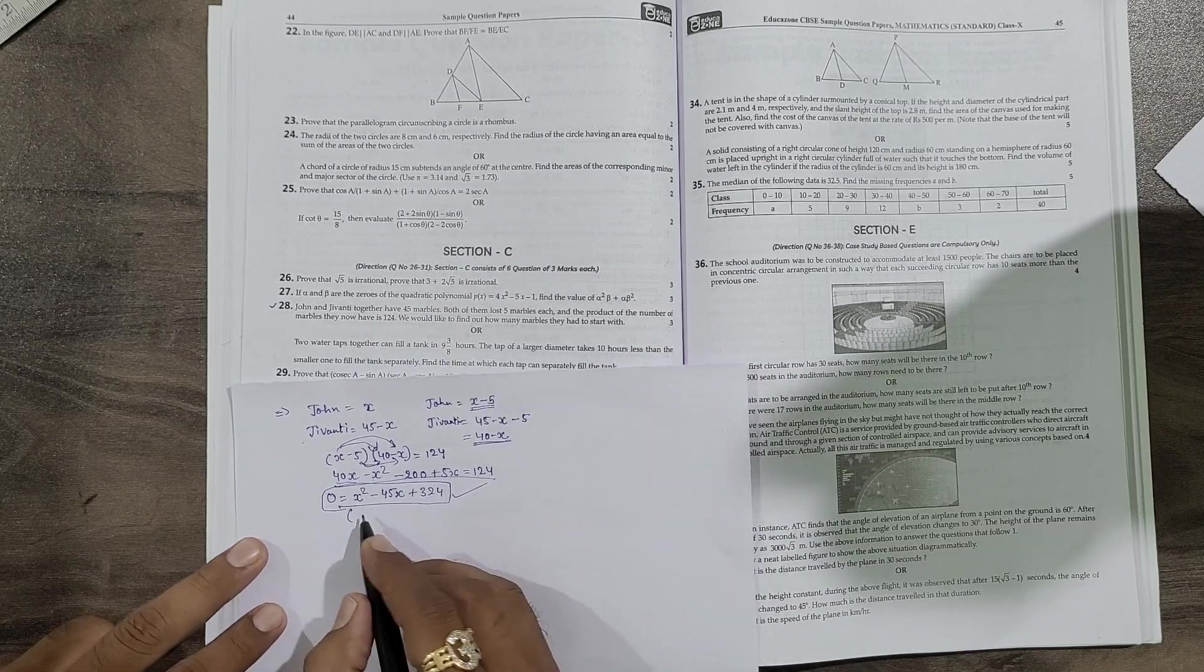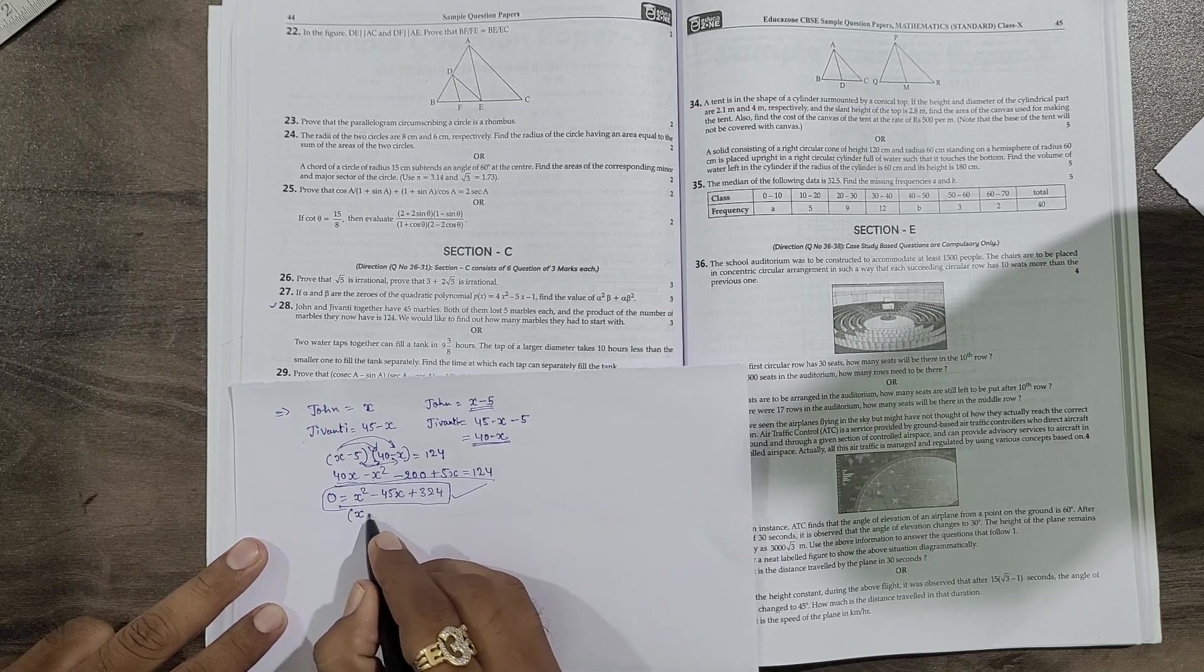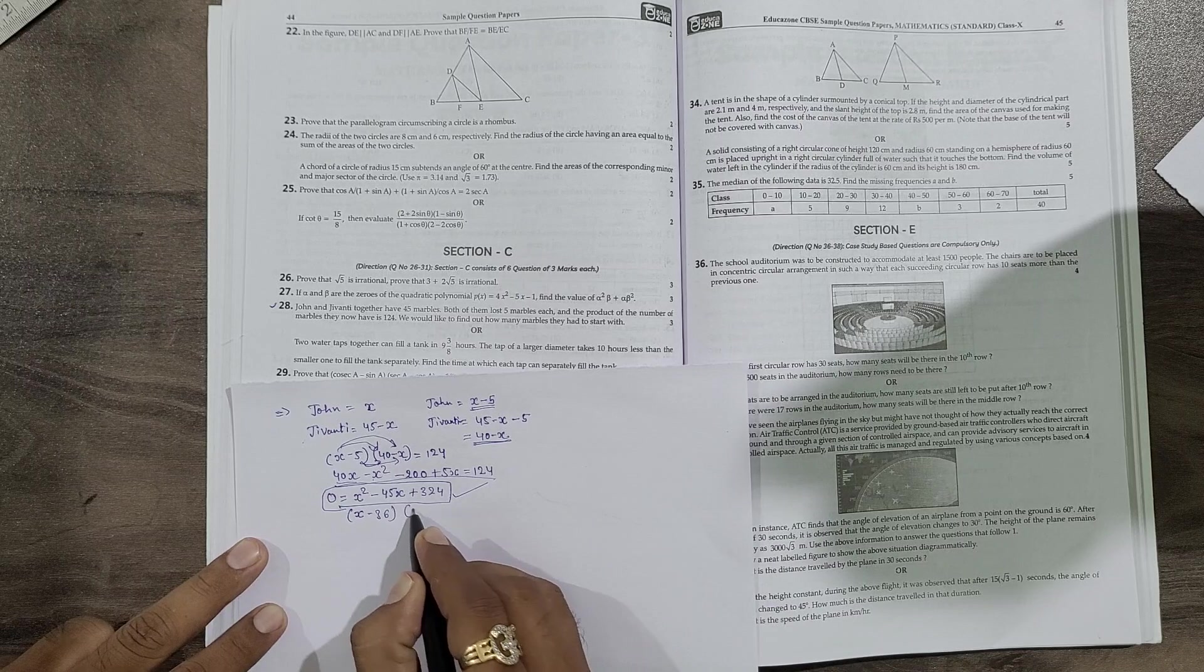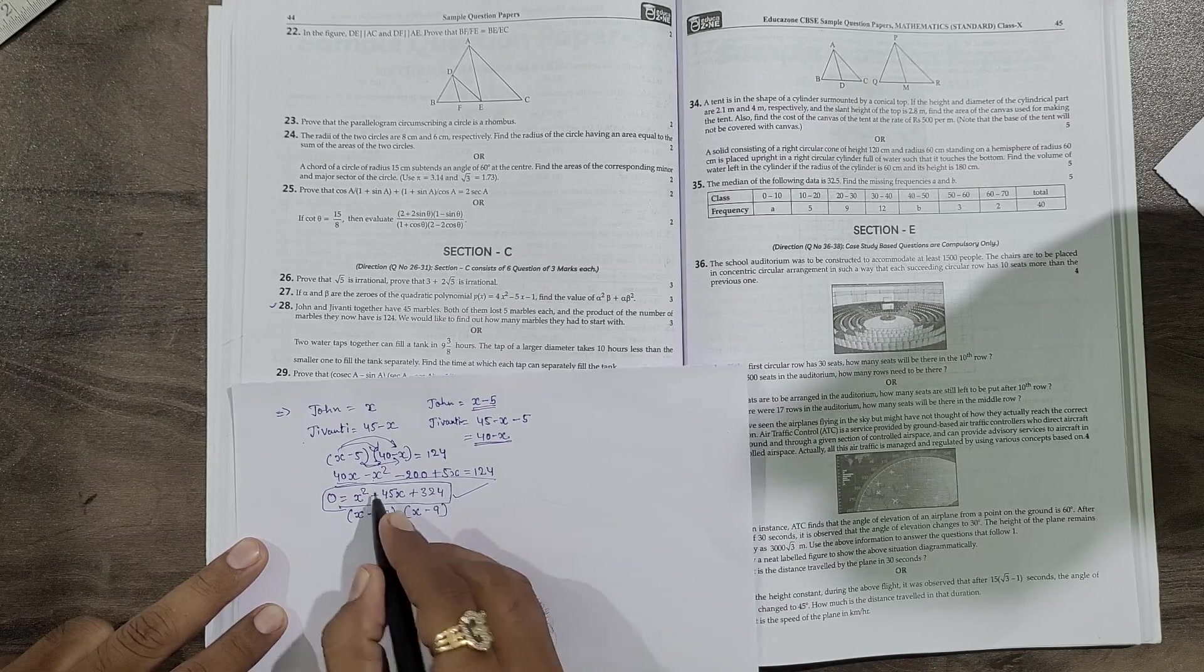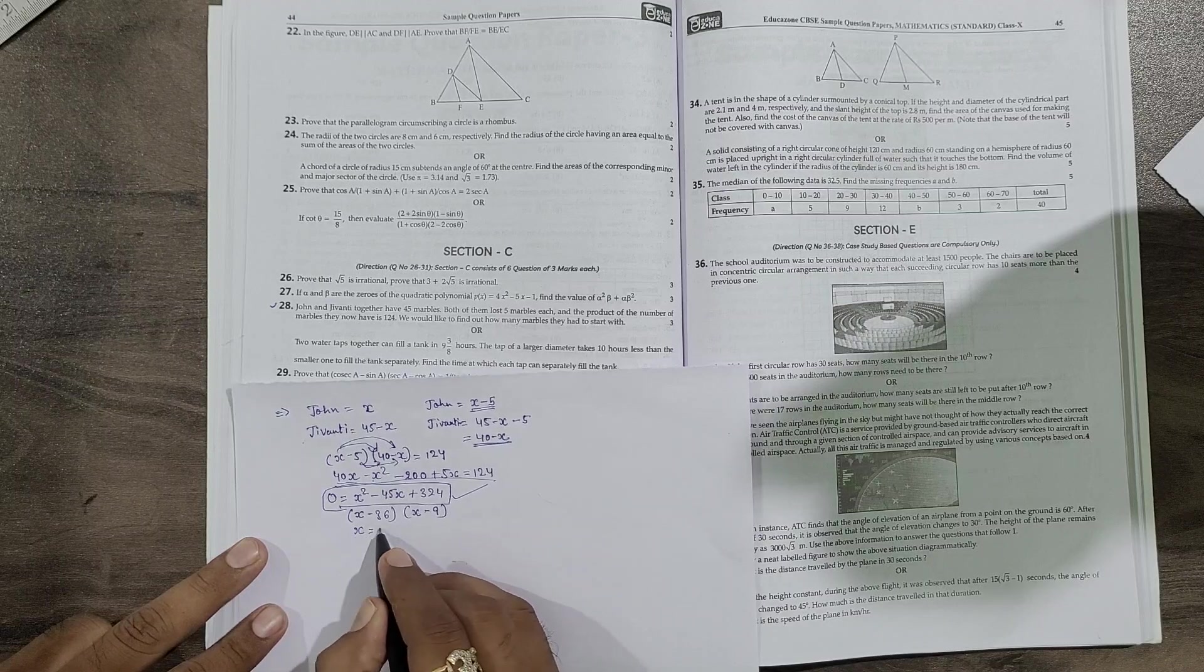It's very simple: 45, so 36 nines are 324. So here you will get (x - 36) and (x - 9). Easily, without splitting also, you can directly give this answer. So the value of x will be either 36 or 9.